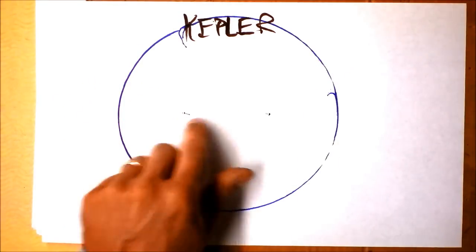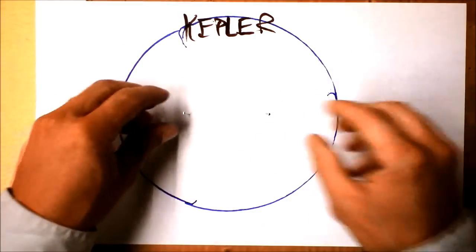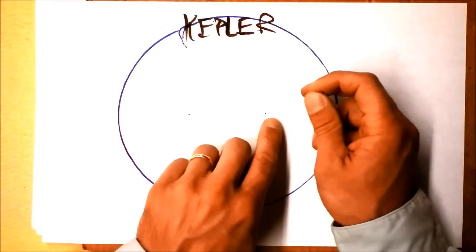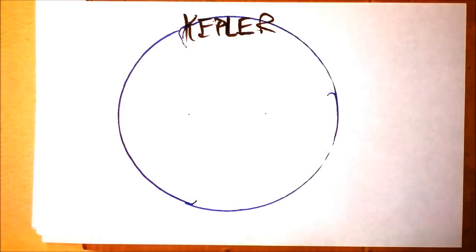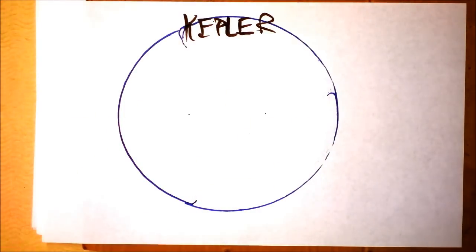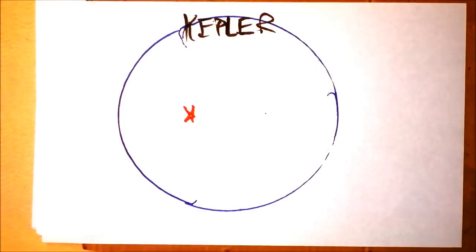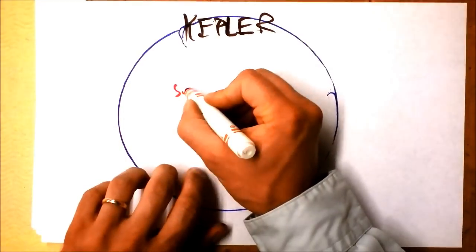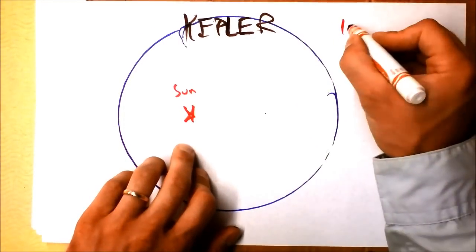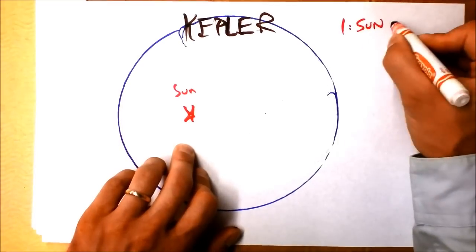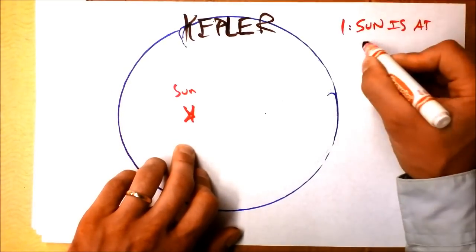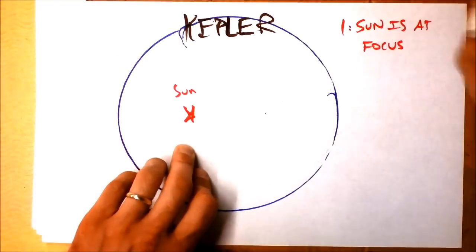So here we have an ellipse and these are the two foci of the ellipse. This focus and that focus. And Kepler's first law says that the sun is at one of these foci. So I'll give you a bright red star there. So one sun is at focus.